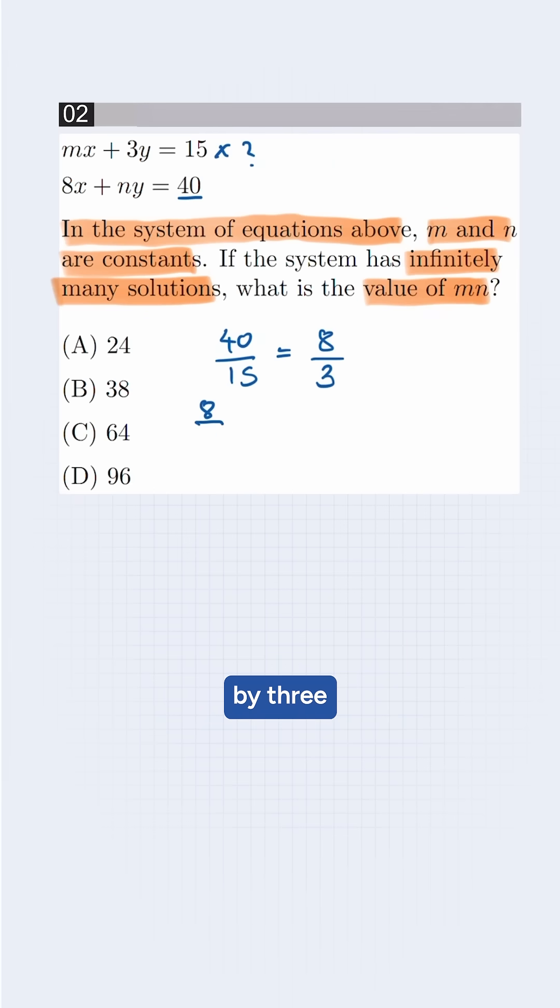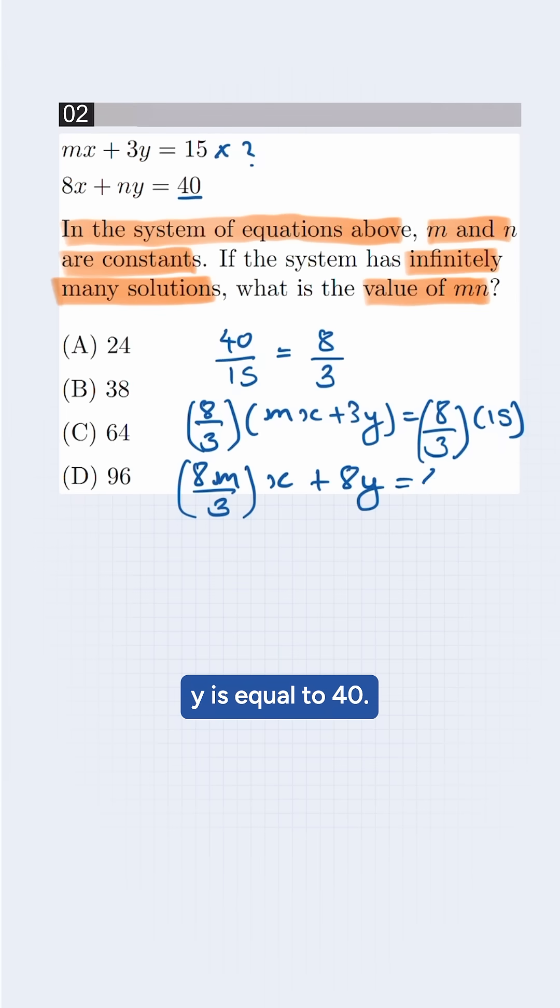We multiply 8 by 3 into the first equation. It will be 8 by 3 into mx plus 3y is equal to 8 by 3 into 15. Our equation will be 8m by 3 into x plus 8y is equal to 40.